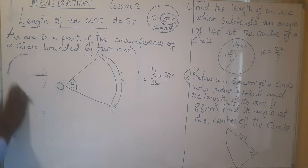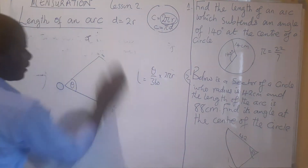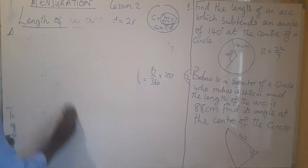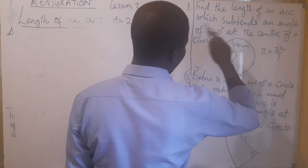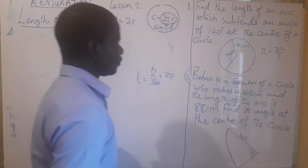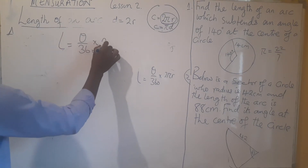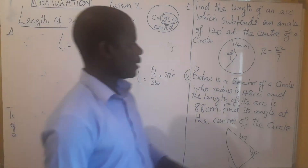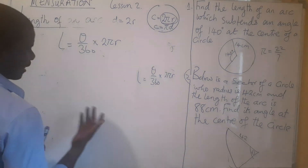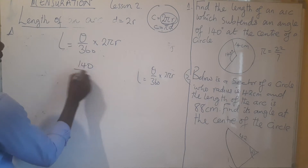We have two examples to calculate. The first question says: find the length of an arc which subtends an angle of 140 degrees at the center of the circle. The formula is L equals (θ/360) × 2πr, and we take π as 22/7. Also, this topic does come in paper one, so at times you may not need to use a calculator.